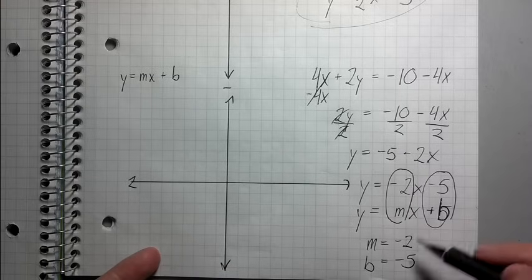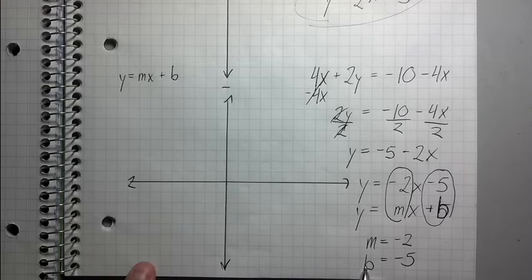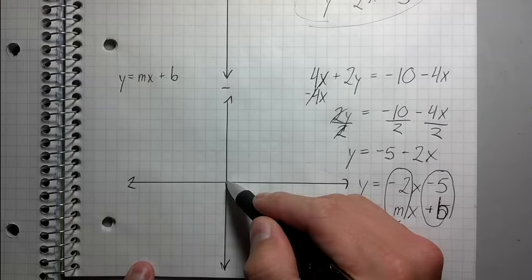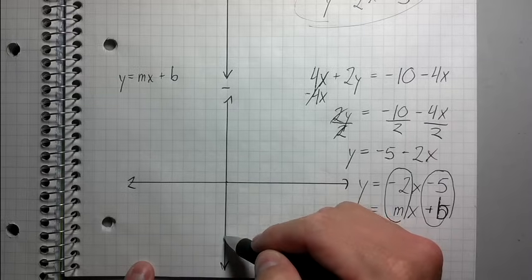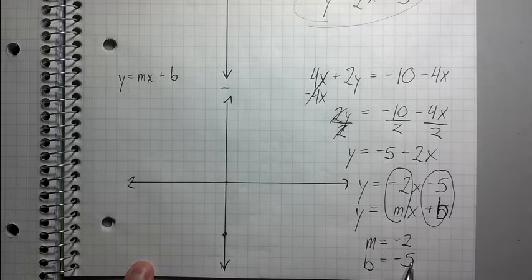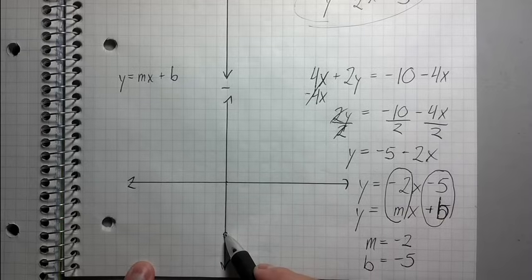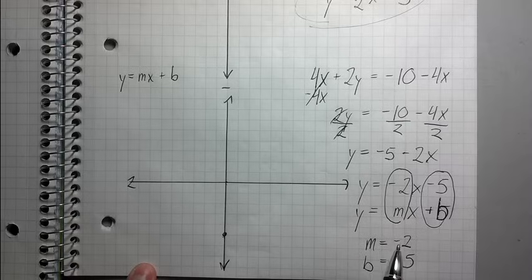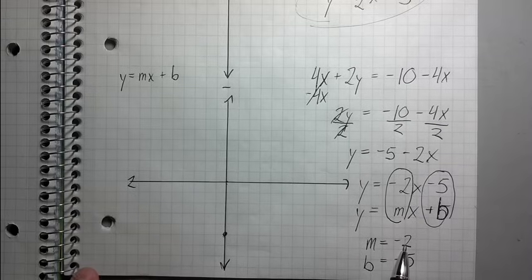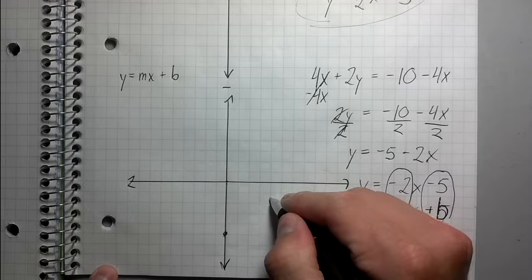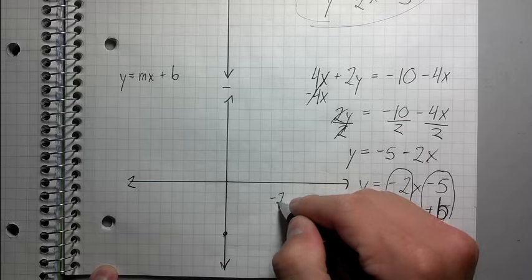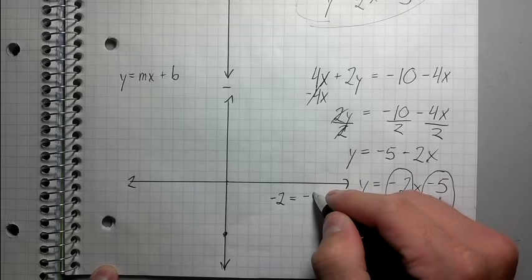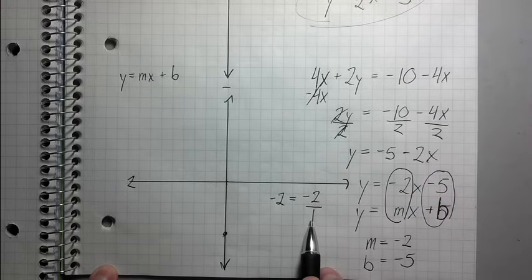The first thing I'm going to do is put my pin on the y-intercept. Since b equals negative 5, I'm going to start at the origin and count downward by 5: 1, 2, 3, 4, 5. I put a dot there. The reason I counted downward is because this was negative 5. Remember, last time it was positive so I counted upward; this one is negative so I count downward. This is my y-intercept, and I know this point is actually going to be on the line.